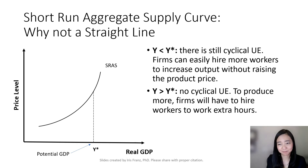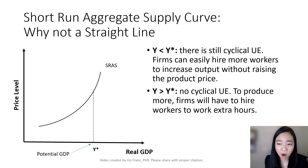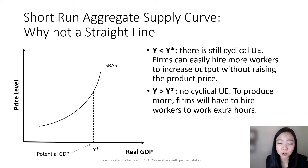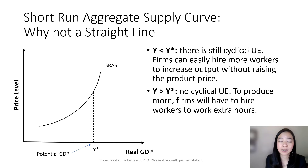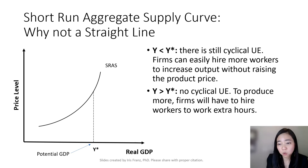Why is that? Before our output reaches our potential, that means in our economy there is still cyclical unemployment. So if we want to produce more, we can just go ahead and hire more workers because there are workers who are still cyclically unemployed.